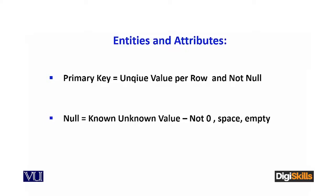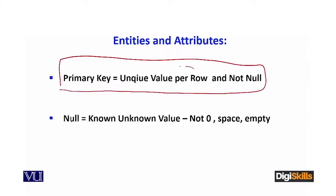Ab isko elaborate karne ke liye, let me give you an equation. Yeh simple si equation hai. Jo primary key hai, it is unique value per row — yarni agar ek customer ID, customer name, customer ka email address hai, aur agla customer agar customer ID ko primary key banaya ho, toh iski value agar pehle customer ke liye one thi, toh doosre ke liye one nahi ho sakti. Iska matlab hai: unique value per row. Uske baad jo interesting cheez hai — it cannot be null.